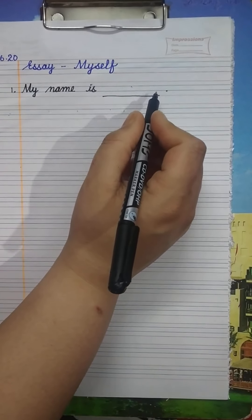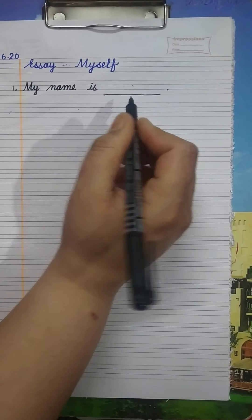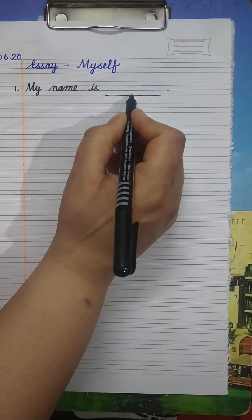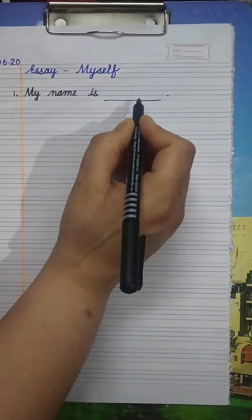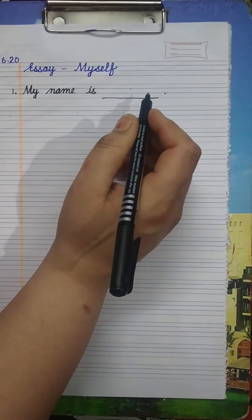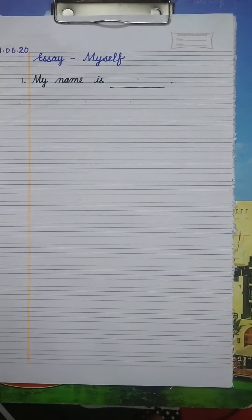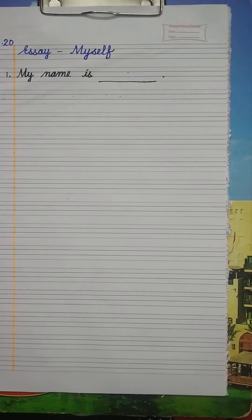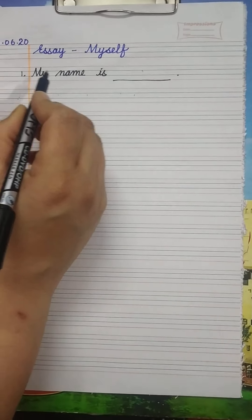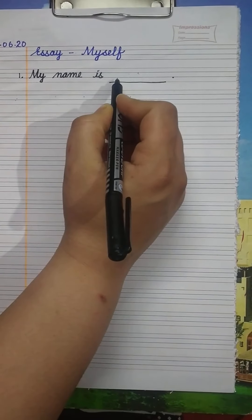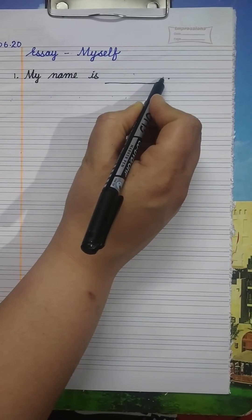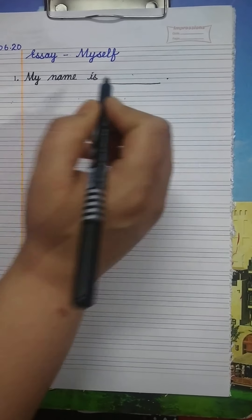Suppose your name is Naqsh, you will write: my name is Naqsh. If someone asks your name, most of you will say only your name — but that is not the correct way. You have to speak in a complete sentence: My name is — then speak your name.